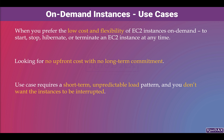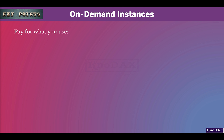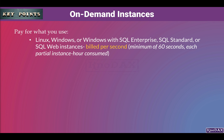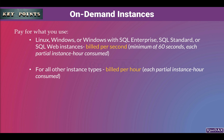On-demand instances can be an optimal choice when developing or testing applications on EC2 instances. As a key point, you pay for what you use. Each partial instance hour consumed is billed per second for instances launched in Linux, Windows, or Windows with SQL Enterprise, SQL Standard, or SQL Web instances. For all other instance types, each partial instance hour is billed as a full hour.